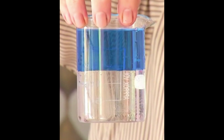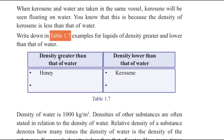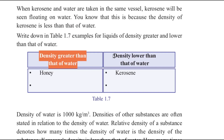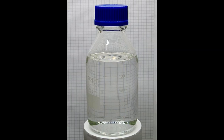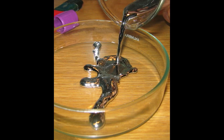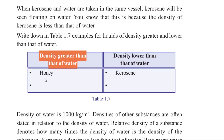Now let us fill Table 1.7. We have to write examples for liquids of density greater and lower than that of water. For liquids with density greater than water, one example given is honey. You can also write sulfuric acid, mercury, and glycerin as additional examples.